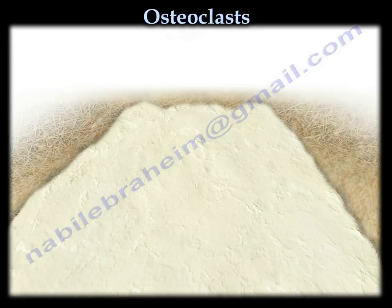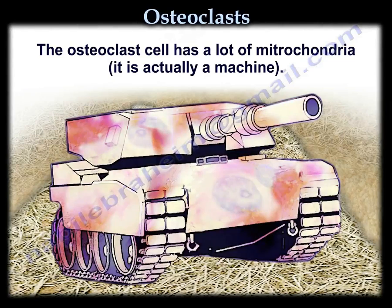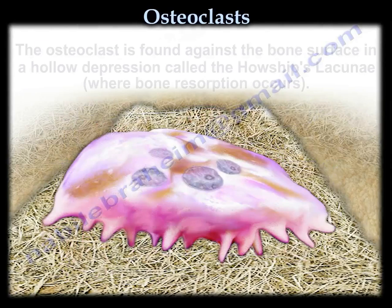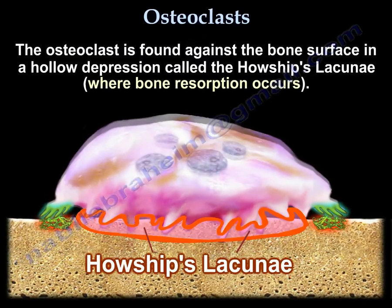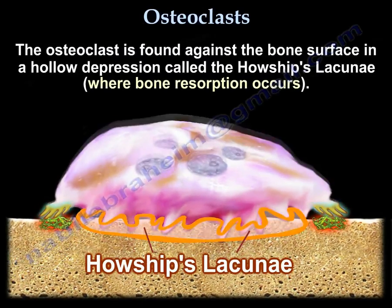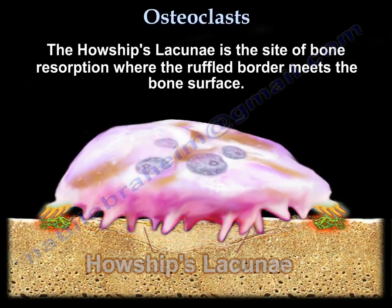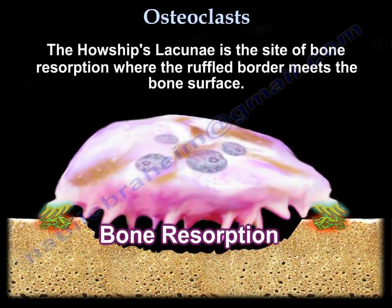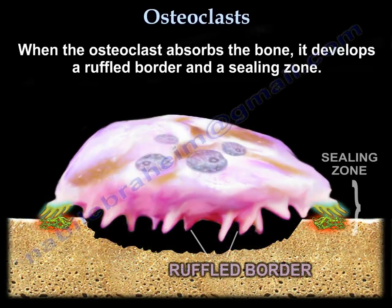The osteoclast has a lot of mitochondria — it is essentially a machine. It is found against the bone surface in a hollow depression called the Howship's lacunae, which is the site of bone resorption, where the ruffled border meets the bone surface. When osteoclasts absorb bone, they develop a ruffled border and a sealing zone.